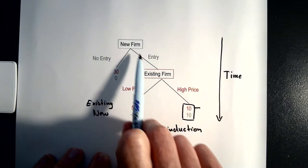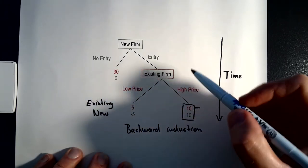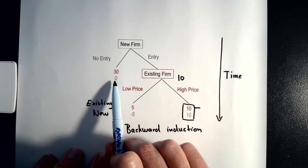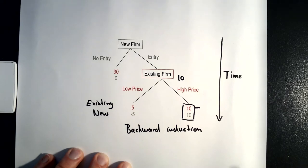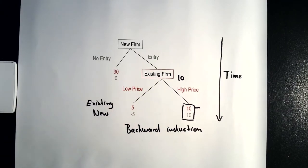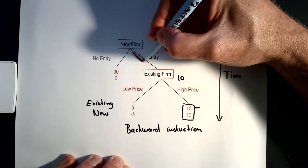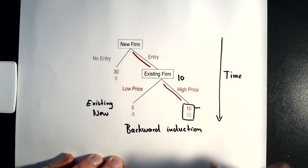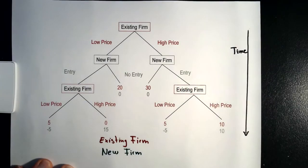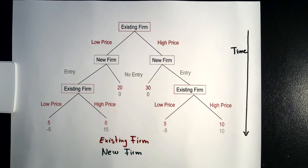The new firm knows that if it enters the market then the existing firm is going to price high, meaning that the new firm is going to have a payoff of ten. Comparing the payoff of zero if the firm does not enter and the payoff of ten if the firm enters, we can clearly say that it is in the best interest of the new firm to enter the market. So the Nash equilibrium is: the new firm enters the market and the existing firm prices high. The threat of a price war is therefore not credible — it is a non-credible threat.